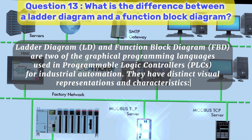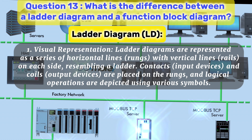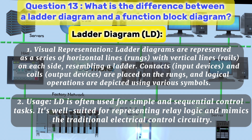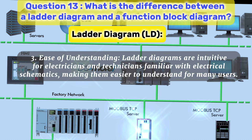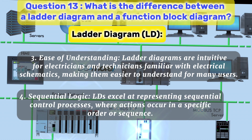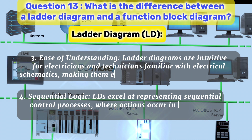They have distinct visual representations and characteristics. Ladder diagram, LD. 1. Visual representation: ladder diagrams are represented as a series of horizontal lines, or rungs, with vertical lines, or rails, on each side, resembling a ladder. Contacts, input devices, and coils, output devices, are placed on the rungs, and logical operations are depicted using various symbols. 2. Usage: LD is often used for simple and sequential control tasks. It's well-suited for representing relay logic and mimics the traditional electrical control circuitry. 3. Ease of understanding: ladder diagrams are intuitive for electricians and technicians familiar with electrical schematics, making them easier to understand for many users. 4. Sequential logic: LDs excel at representing sequential control processes, where actions occur in a specific order or sequence.